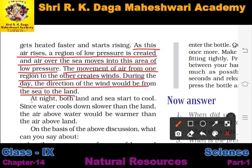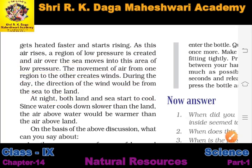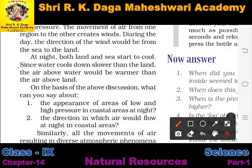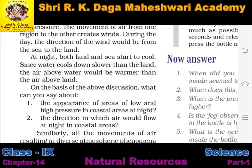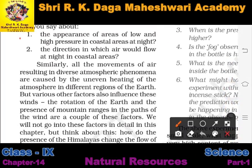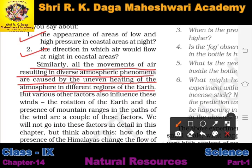Sea air is cooler and land air is hotter during the day. At night, both land and sea start to cool, but since water cools down more slowly than land, the air above the water would be warmer than the air above the land. This leads to questions about the areas of low and high pressure in coastal areas at night.